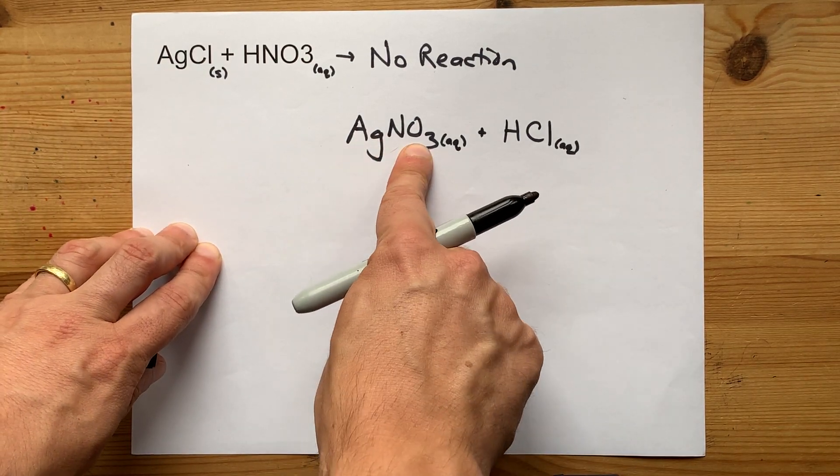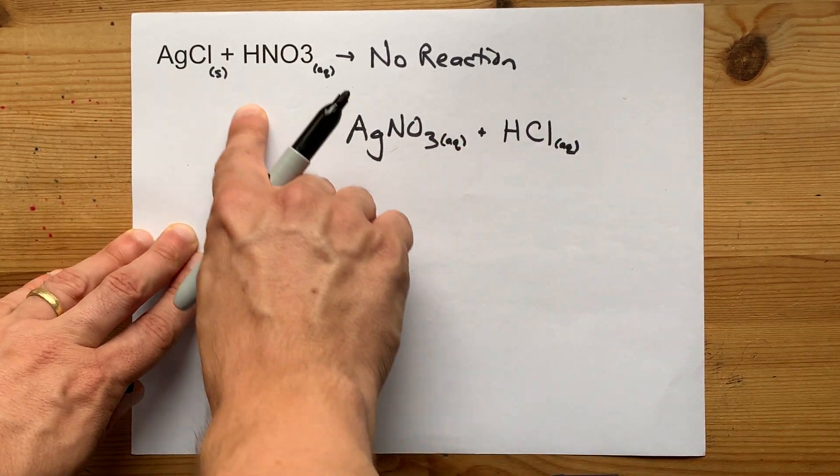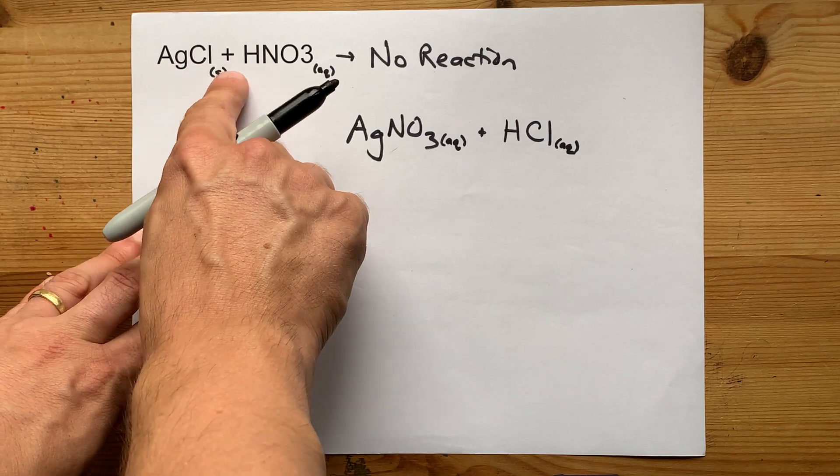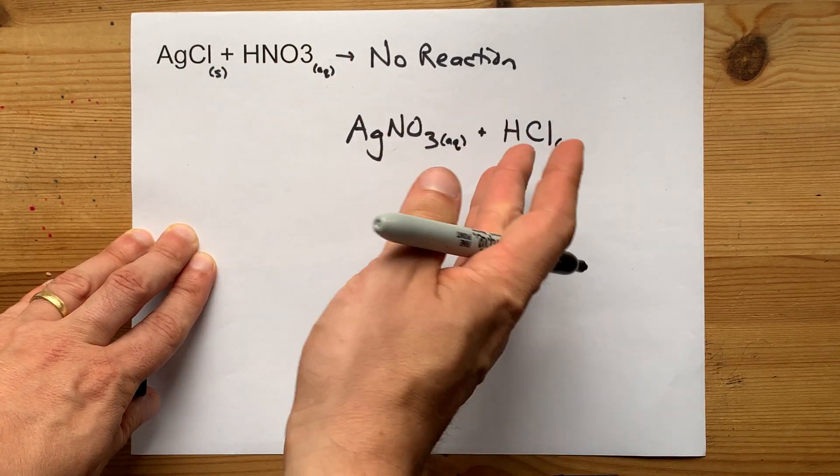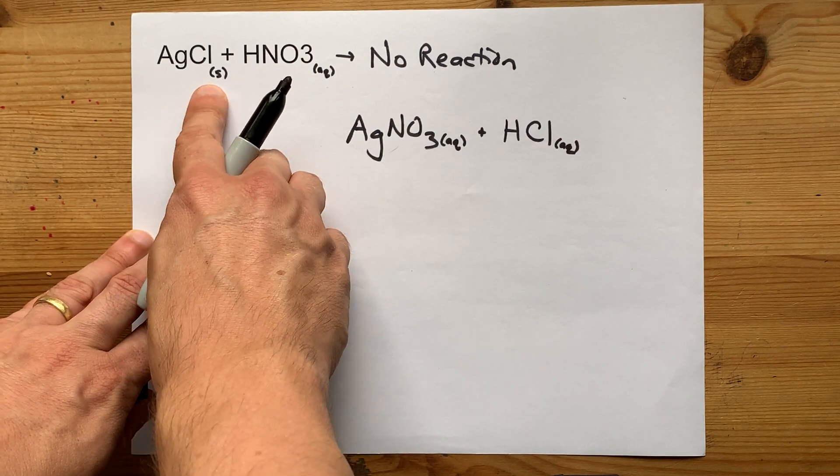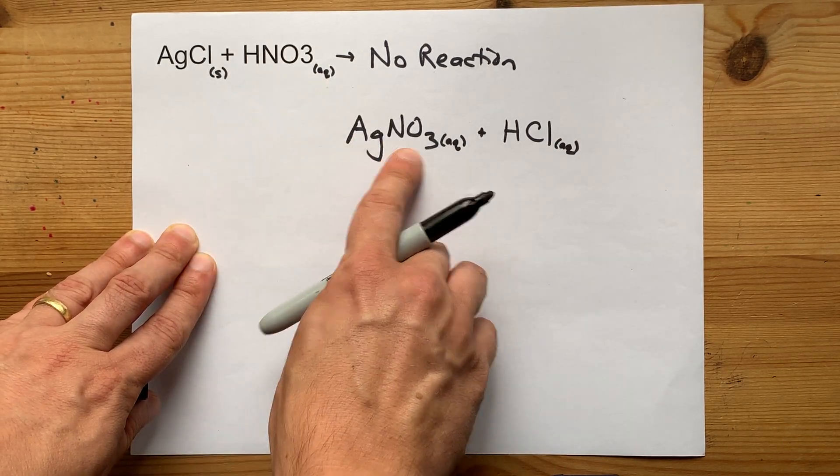So mixing silver nitrate and hydrochloric acid will get you silver chloride and nitric acid. But it's a one-way reaction.